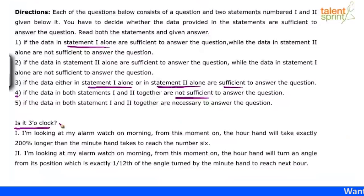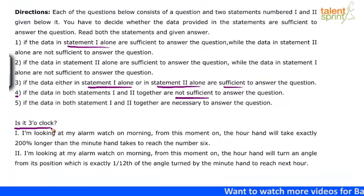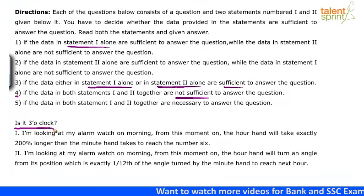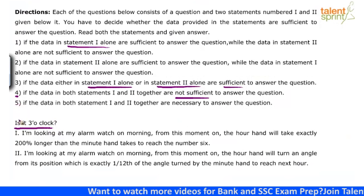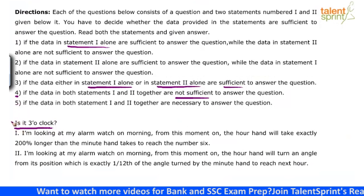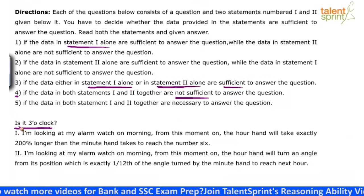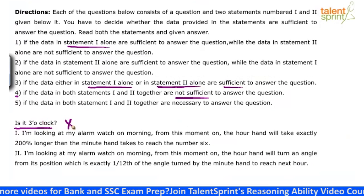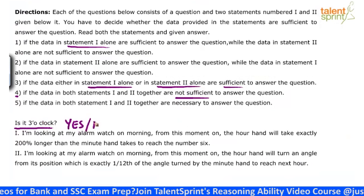The question here says, is it 3 o'clock? This particular question type from data sufficiency is very important and actually a little tricky. The reason is that the question starts with the word 'is'. Anything that starts with 'is' or 'was' will have two possible answers — either the answer is yes or the answer will be no.